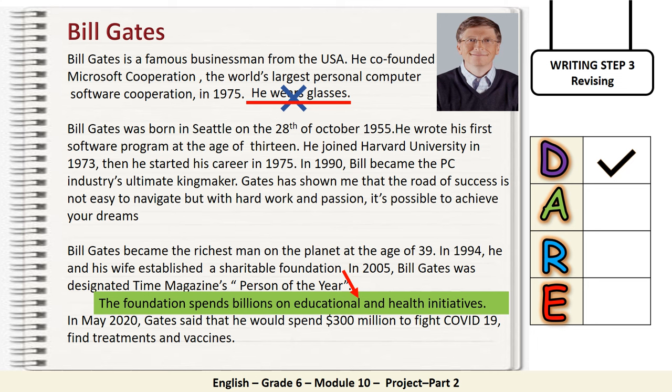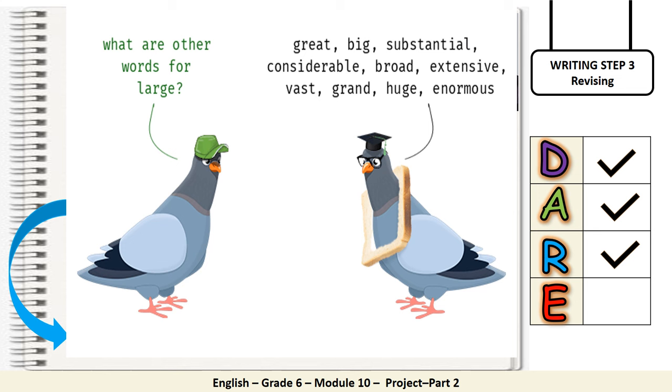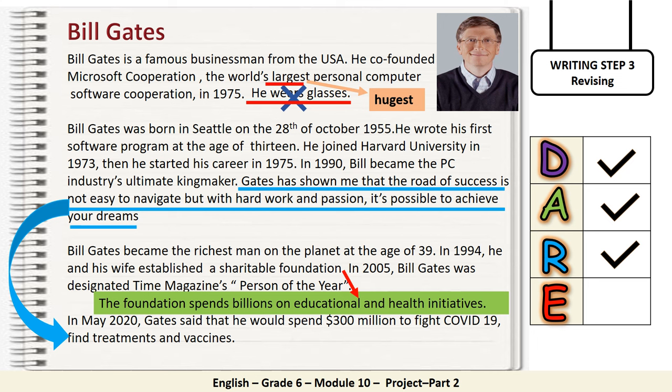Let's read one more time to see if you need to rearrange any of your sentences. Perfect — you need to place this sentence in the last paragraph because, as we said before, you need to place information about what he taught you in the last paragraph. I need you now to substitute the word 'largest' for a stronger one. Very good — you can use the word 'huge,' and remember to use the superlative form of the word 'huge.'